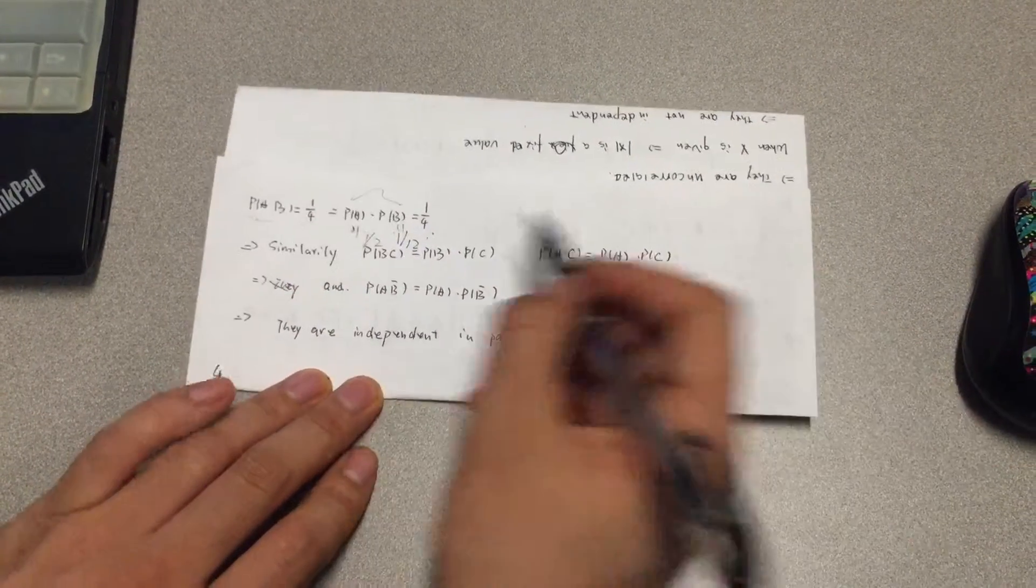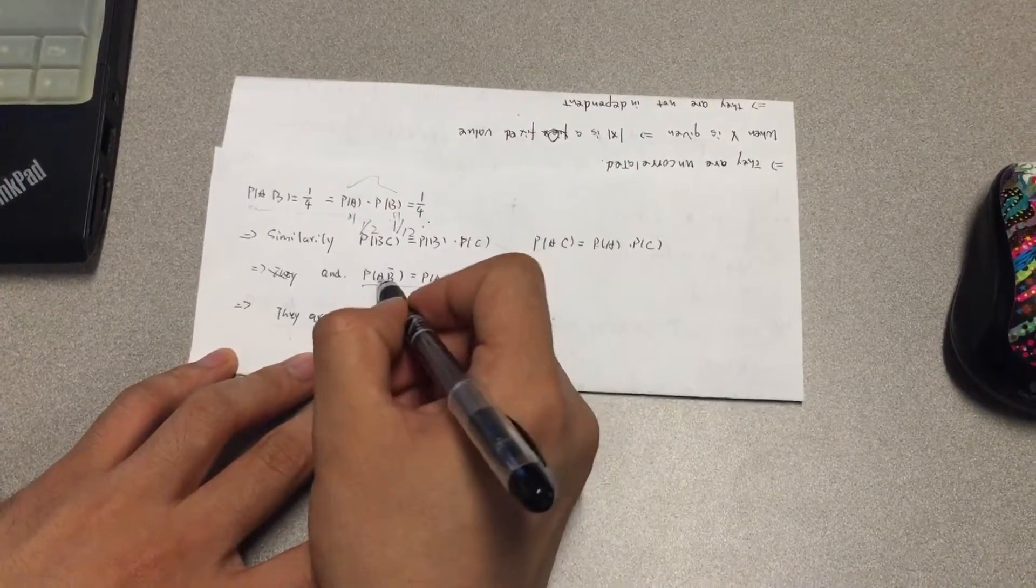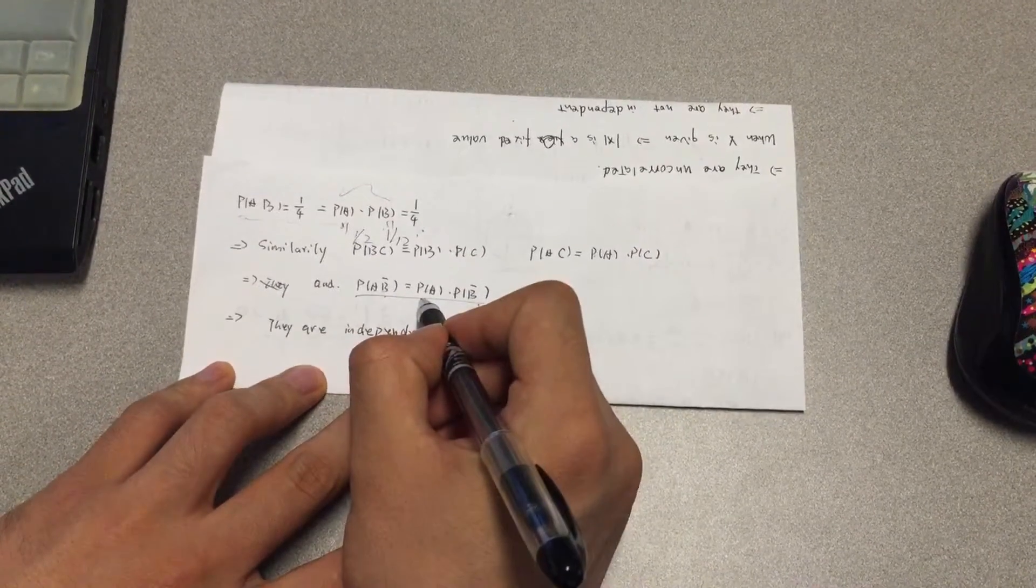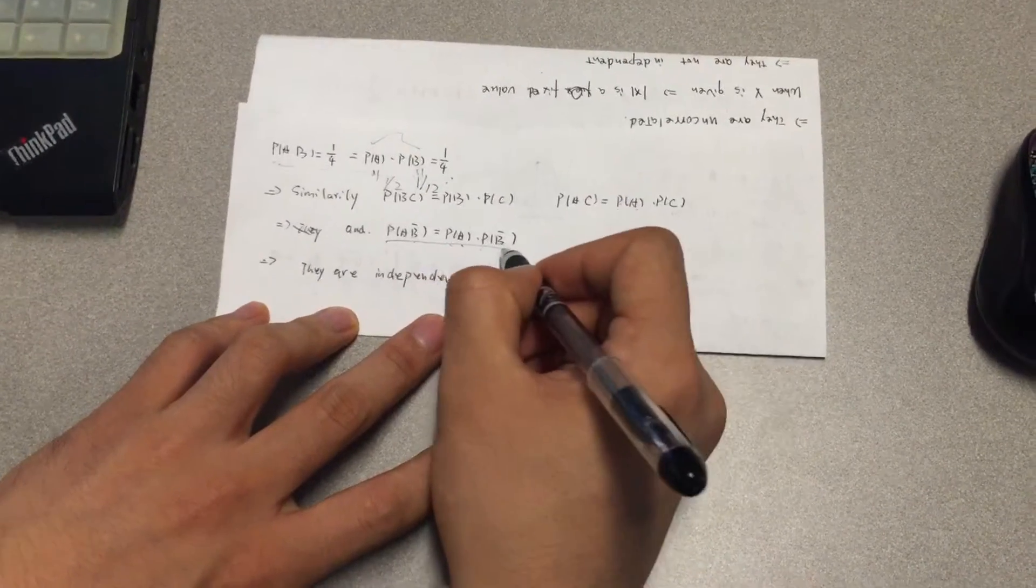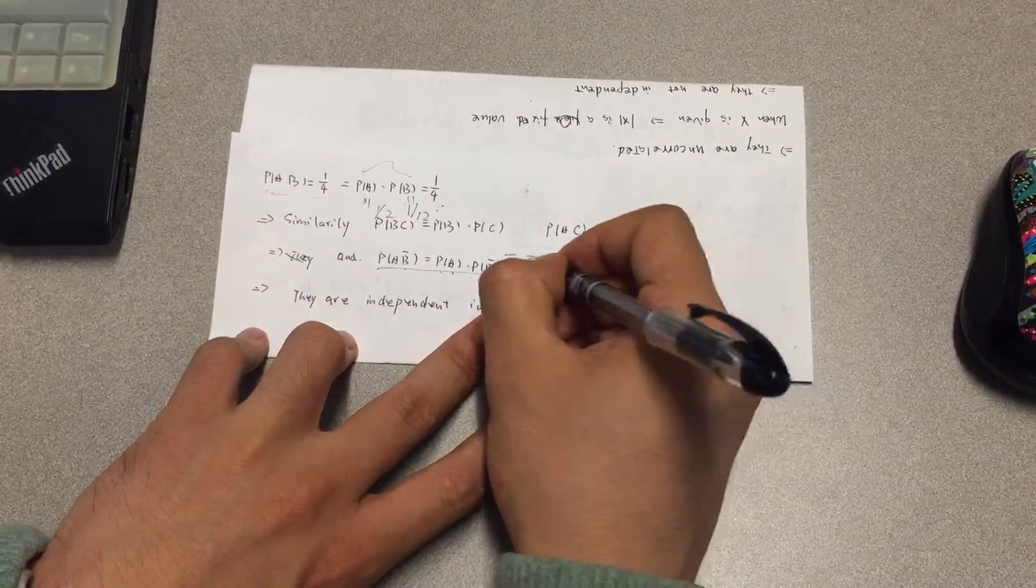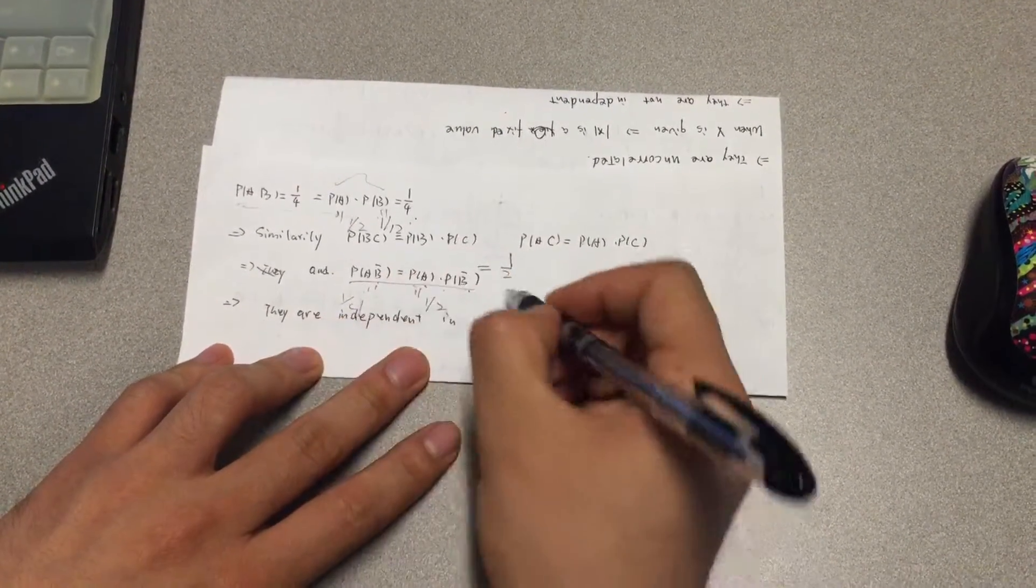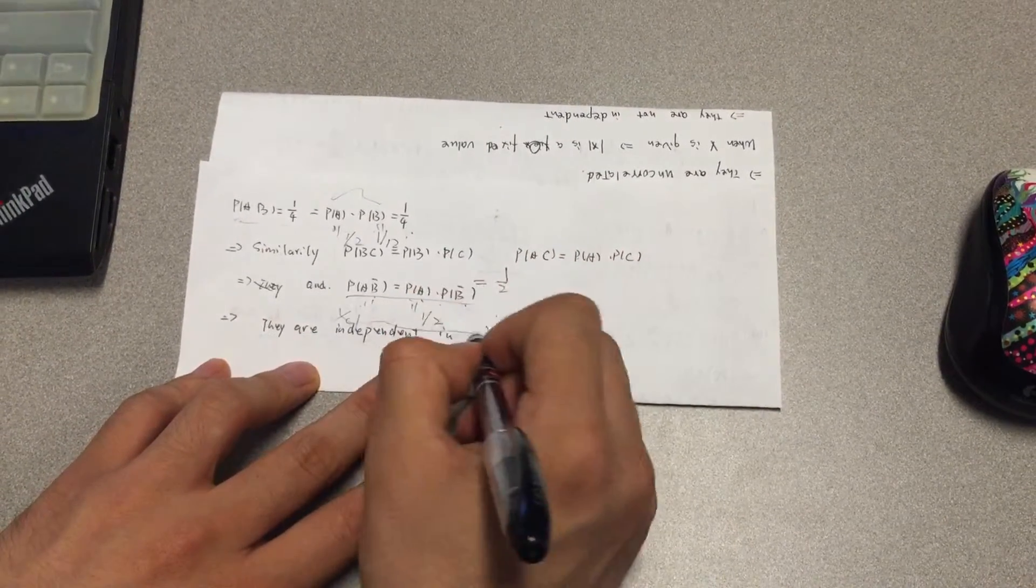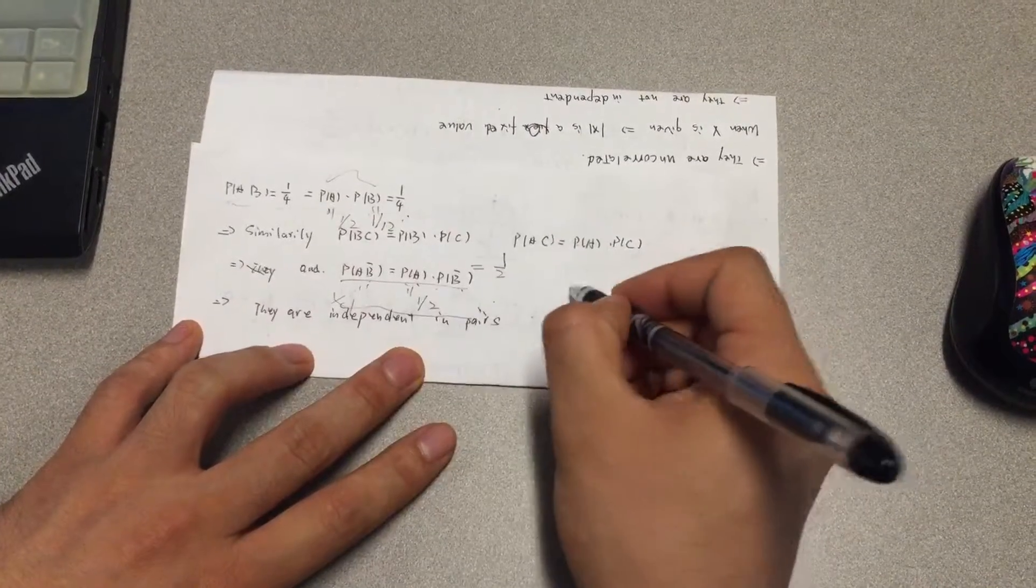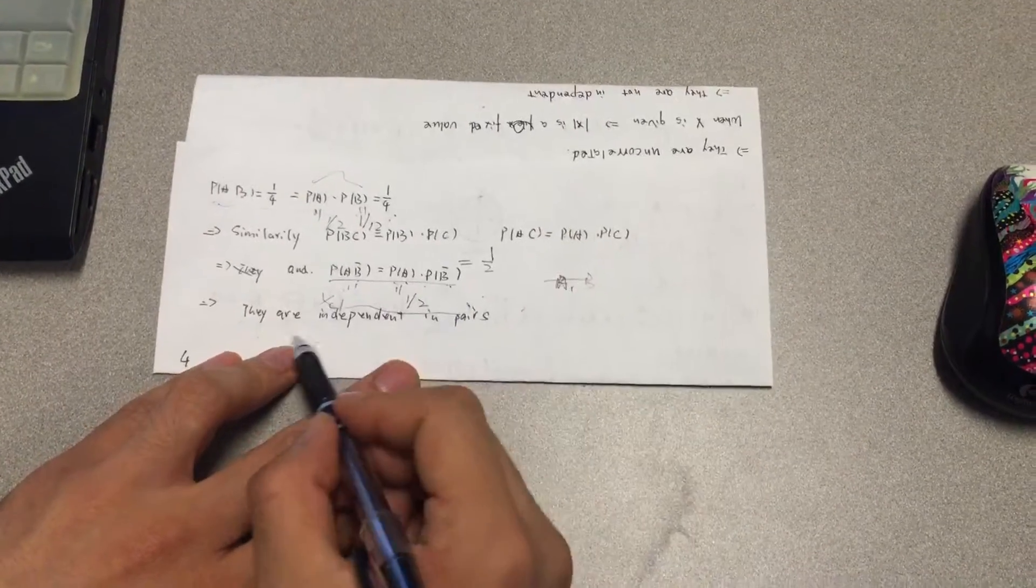We also need to prove that P(A∩C) equals P(A)·P(C). As this one is also equal to 1/2, and P(A) is 1/2, and P(C) is 1/2, this equation is right. So we can prove that P(A) and P(B) are independent in pairs.